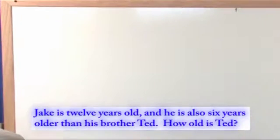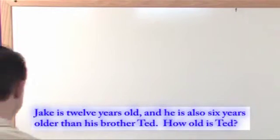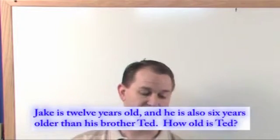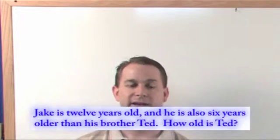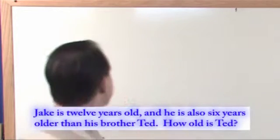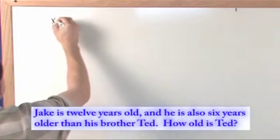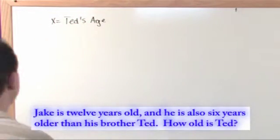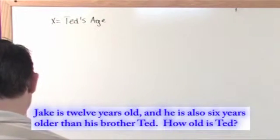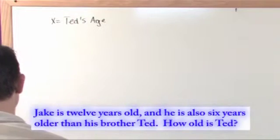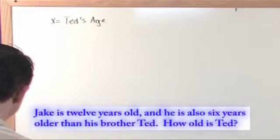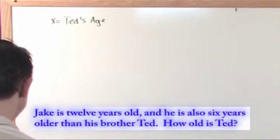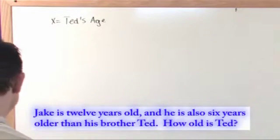So what we're going to do is find out Ted's age. Ted is the unknown — we don't know his age, that's what the question asks. You always look to see what the question is actually asking you. Ted is the unknown, so we're going to use variable x to be Ted's age. I always write it down on my paper — Ted's age is variable x — so that you never forget what exactly the variable is you're talking about. In equation form, where it says Jake is 12 years old and he's also 6 years older than his brother Ted, you want to write that down into equation form.